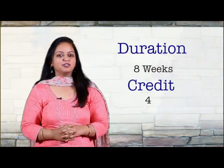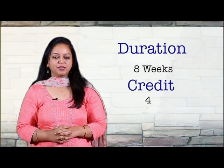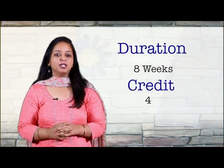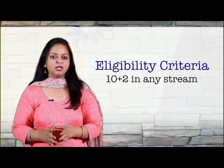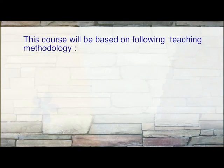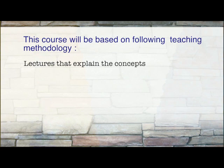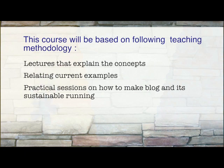The duration of the course will be eight weeks and the credit of the course will be four. The eligibility criteria is anyone who has completed plus two in any stream. This course will be based on the following teaching methodology: lectures that explain the concepts, relating current examples, practical sessions on how to make blogs and their sustainable running, assignments, and quiz.